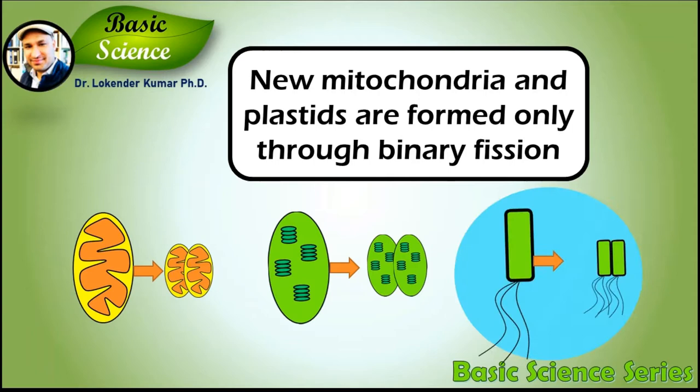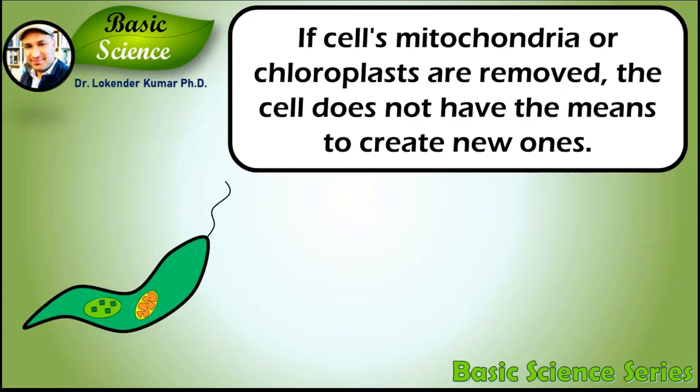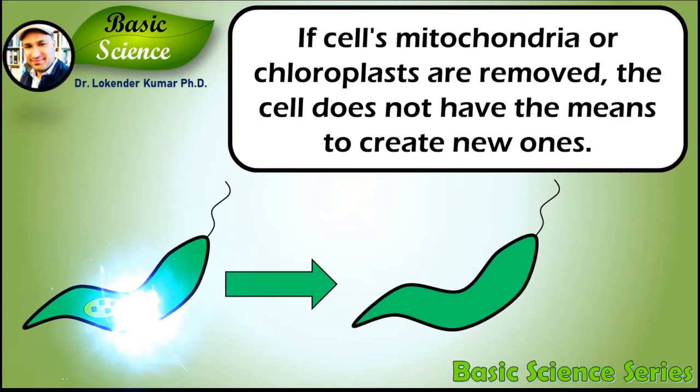If a cell's mitochondria or chloroplasts are removed, the cell does not have the means to create new ones. For example, in some algae such as euglena, the plastids can be destroyed by certain chemicals or prolonged absence of light without otherwise affecting the cell. In such a case, the plastid will not regenerate.